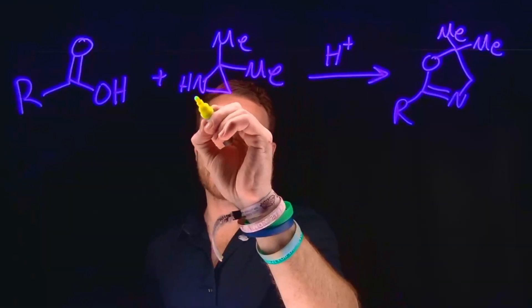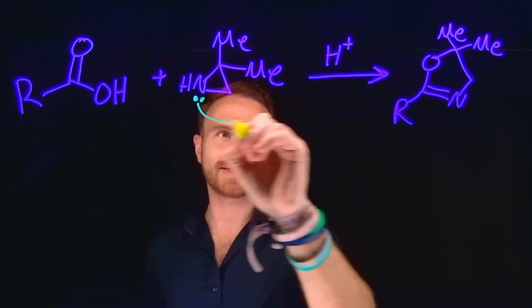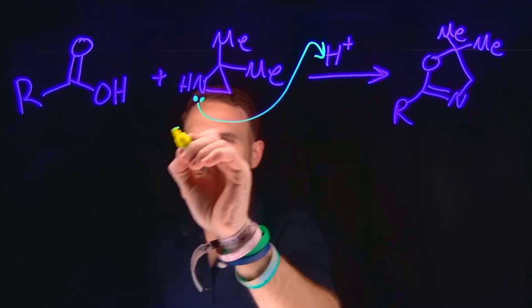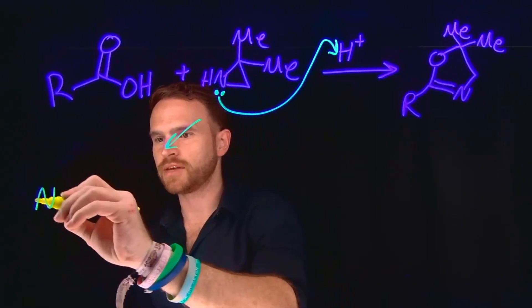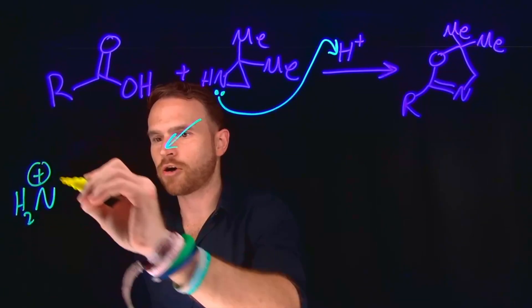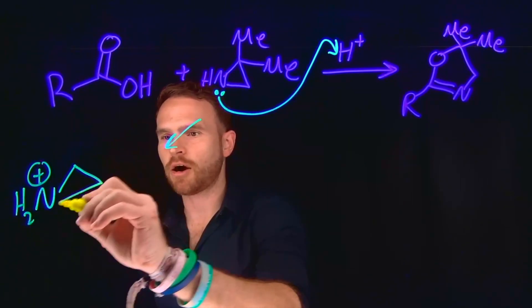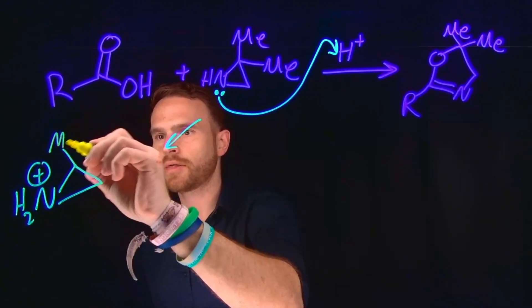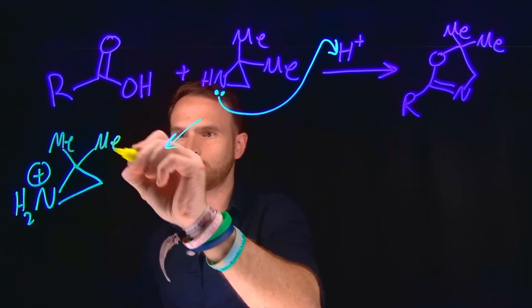And the first step in this mechanism is actually going to be to protonate the aziridine using our acid. So a protonated version of this will be formed where now we have a positive charge on that nitrogen and then we still have the rest of our three-membered ring here with our two methyl groups on it.